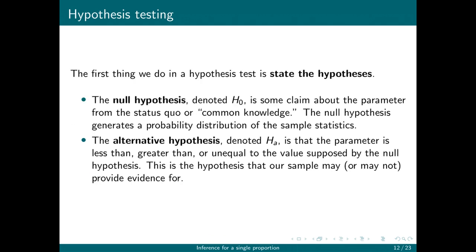The first thing we do in a hypothesis test is state the hypotheses. The null hypothesis, denoted H0, is some claim about the parameter from the status quo or common knowledge. This is what we assume the parameter is. The null hypothesis therefore generates a probability distribution of the sample statistics, usually according to the central limit theorem.